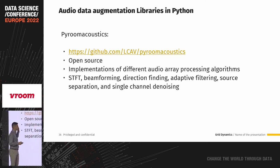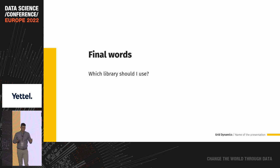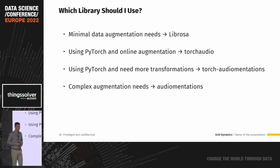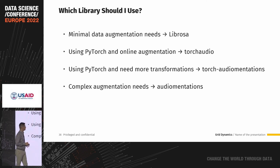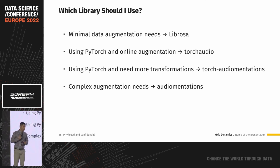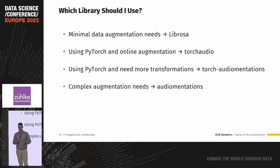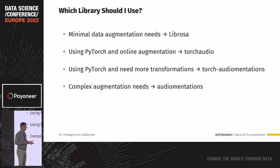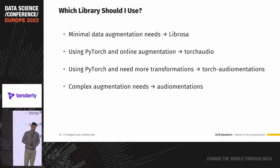For final guidance on which library to use: if you have minimal augmentation needs, Librosa is sufficient. If you're writing code with PyTorch and need online augmentation, go with TorchAudio. If you need more transformations, consider Torch-Audiomentations. And if you have complex needs requiring exotic transformations, use Audiomentations — or even write your own custom functions.